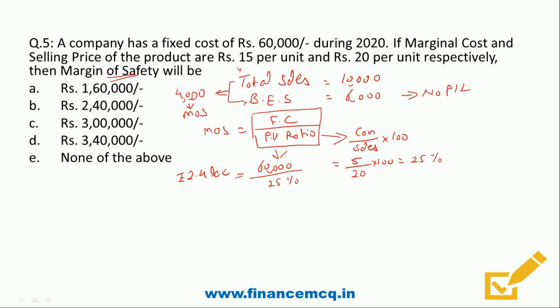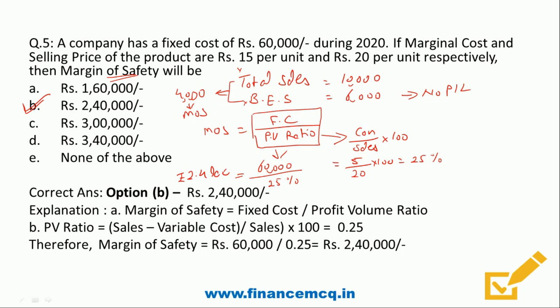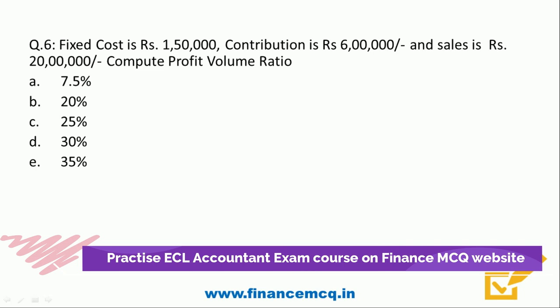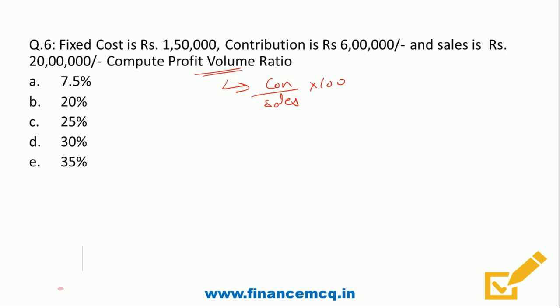Question 6: Fixed cost is ₹1,50,000, contribution is ₹6 lakh, and sales is ₹20 lakh. Compute the Profit Volume (P/V) ratio. Options: A: 7.5%, B: 20%, C: 25%, D: 30%, E: 35%. The formula is Contribution ÷ Sales × 100 = ₹6 lakh ÷ ₹20 lakh × 100 = 30%. The correct answer is Option D: 30%.